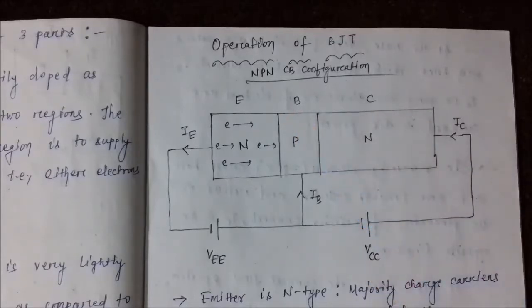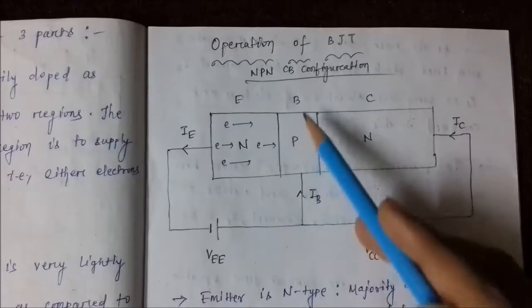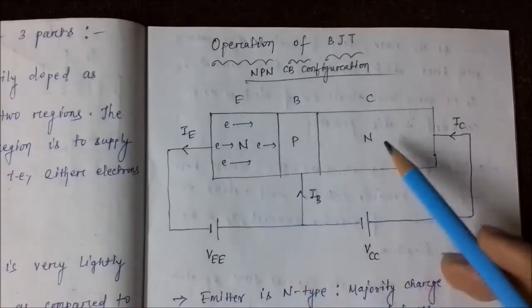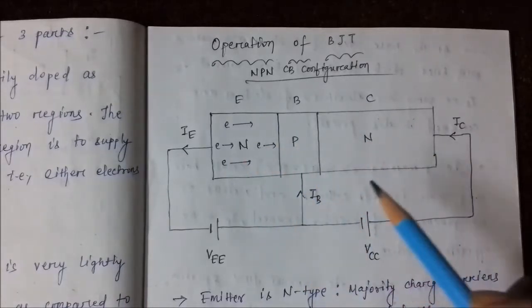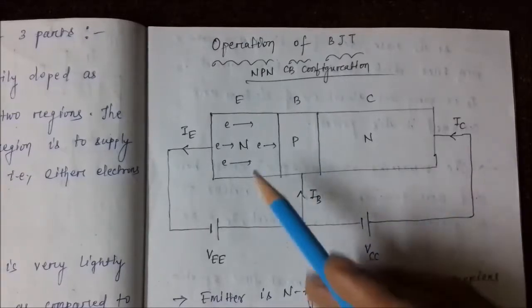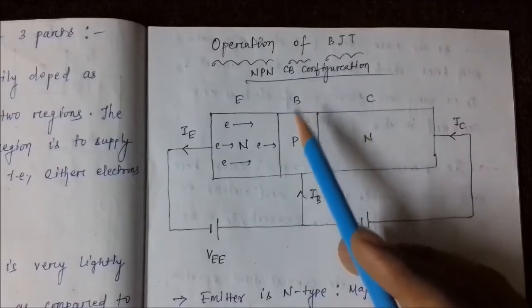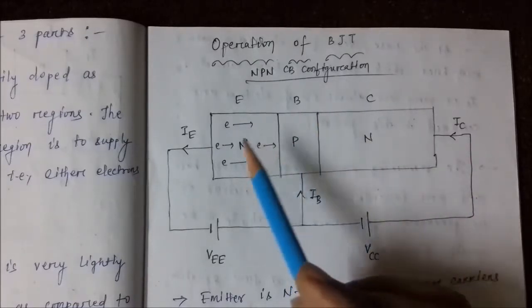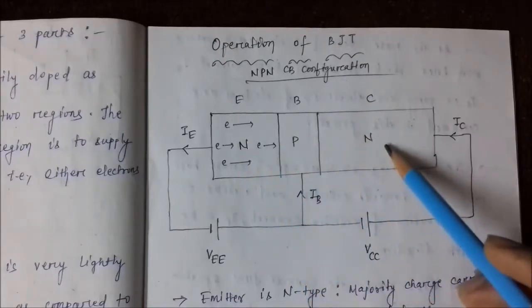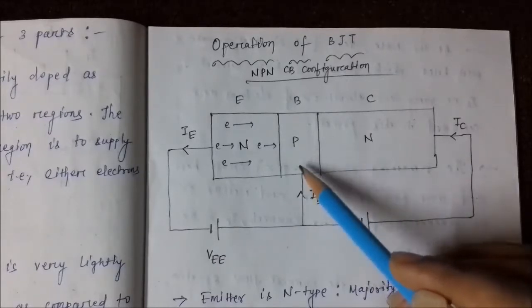As we are discussing the NPN configuration, the majority charge carriers are electrons and the emitter acts as a source for electrons, so it is heavily doped. The base region is very thin compared to the other two regions. The base is doped with p-type impurity, so in the base region there is some electron-hole recombination. Its main objective is to direct the charge carriers from the emitter side towards the collector and to absorb as few electrons as possible.